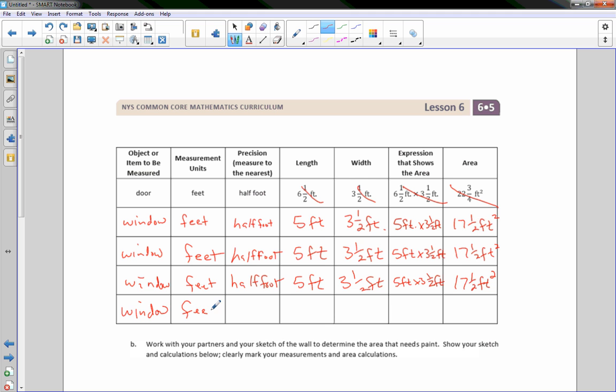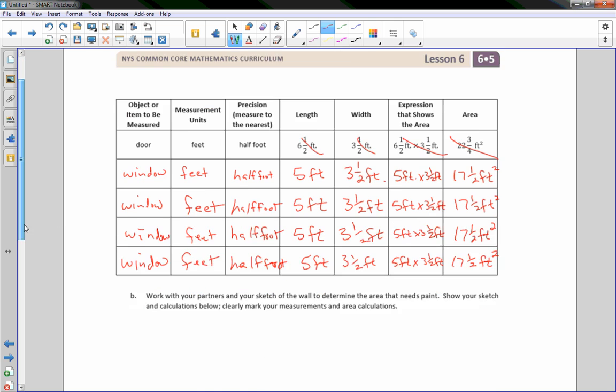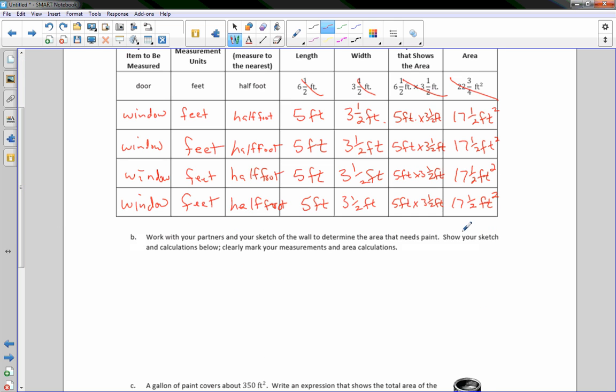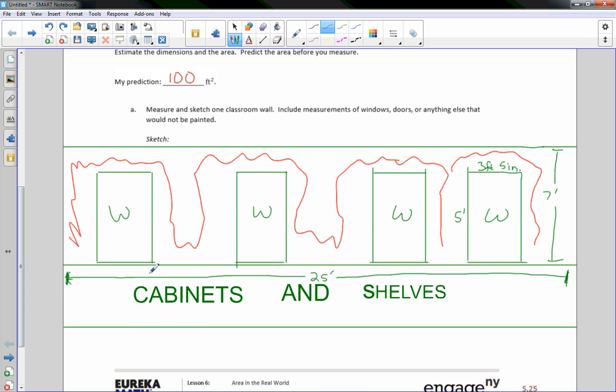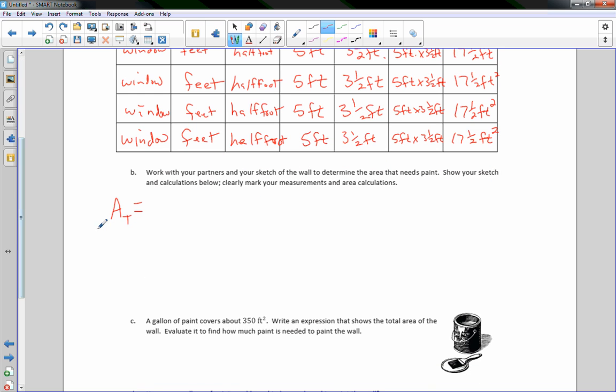So we have a window, measuring in feet. Precision is every half foot, rounding to half foot. The window is five feet tall, or length. And the width is three and one half feet. So it's five feet by three and one half feet, which equals 17 and one half feet squared. So it says here, work with your partner and sketch the wall to determine the area that needs paint. Show your sketch and calculations below. Clearly mark your measurements and the area calculations.